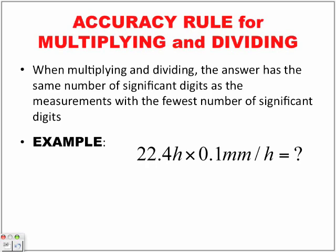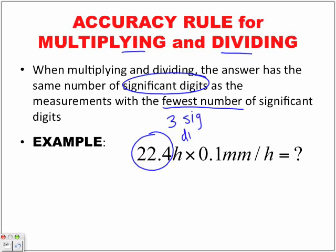When multiplying and dividing, the answer has the same number of significant digits as the measurement with the fewest number of significant digits. So our first value has three significant digits, and our next number that we're multiplying together has one significant digit. The fewest number is one significant digit.